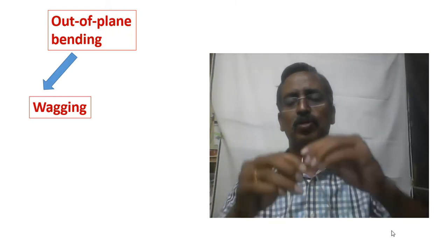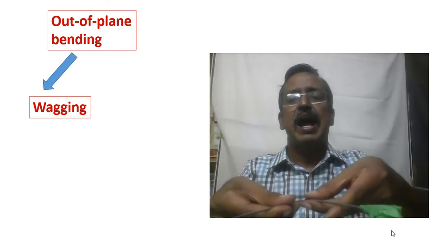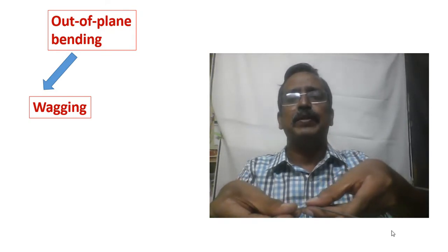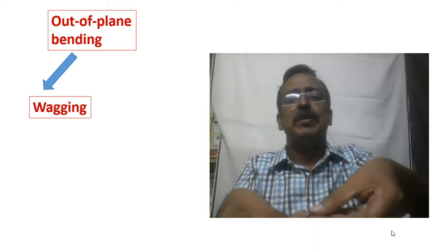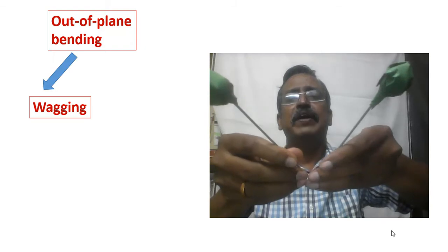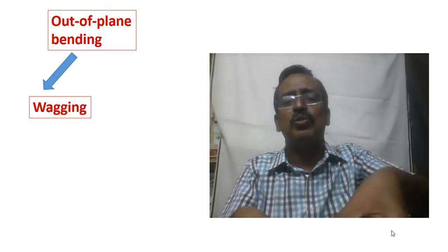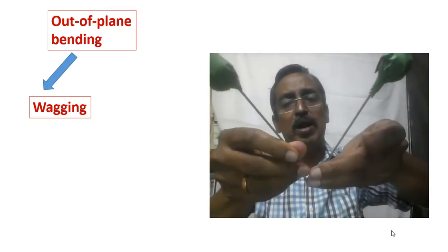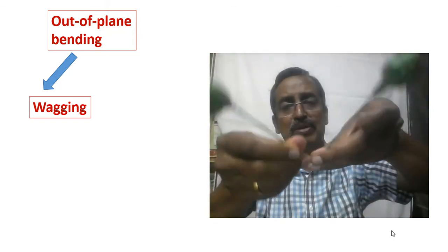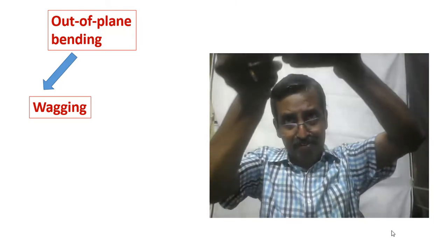The out-of-plane bending also has two types. When both bonds go up out of the plane, it is indicated by two positive signs. When both bonds go down the plane, it is indicated by two negative signs. Either both bonds go up or both bonds come down — this is known as wagging.